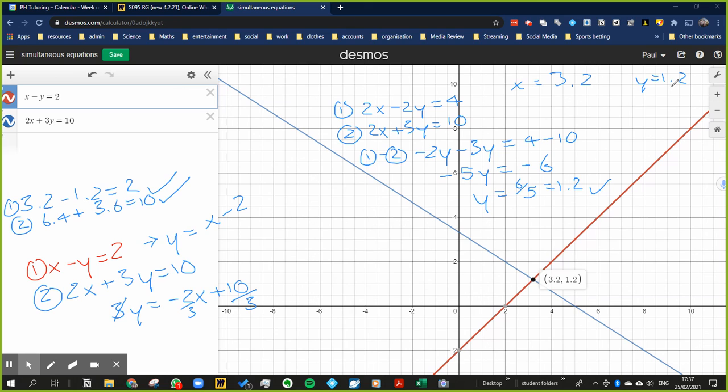So we just sub in that value for y into one of our equations. So let's look at equation one. We can look at our version and we can look at their version. Let's do their version because it's simpler: x minus y is equal to 2.